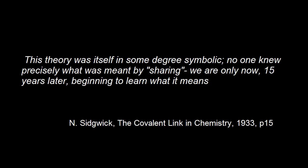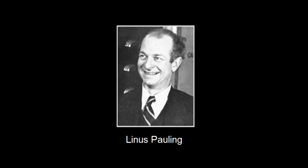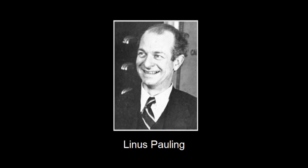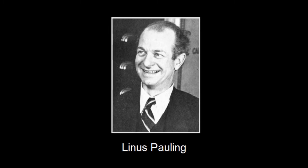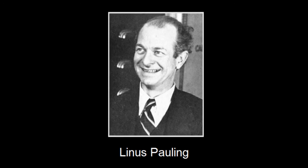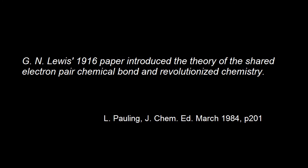The following decade, Neville Sidgwick published a book based on a series of lectures given at Cornell University. He noted that it had taken approximately 15 years to obtain a sound theoretical basis for Lewis' ideas. One of the theoretical chemists who helped provide that theoretical foundation was Linus Pauling, who, in his earlier years at the California Institute of Technology, had been a target for Lewis in his effort to attract talented scientists to Berkeley. Half a century later, Pauling would credit Lewis with revolutionising chemistry with his ideas.